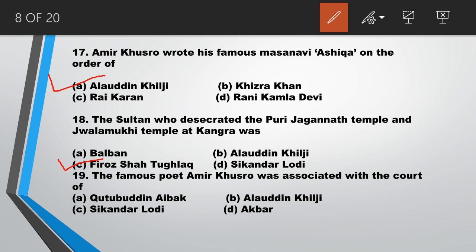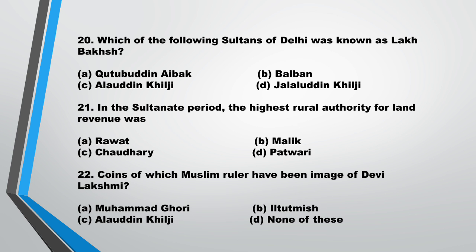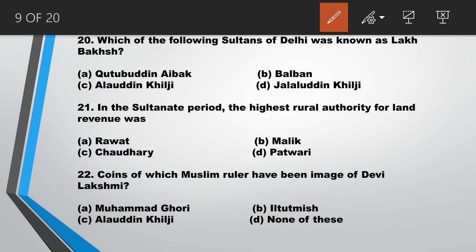Question number 19: the famous poet Amir Khusro was associated with the court of answer B, Alauddin Khilji. Question number 20: which of the following Sultans of Delhi was known as Lakhbakhsh? Answer is A, Qutbuddin Aibak. Question number 21: in the Sultanate period, the highest rural authority for land revenue was answer C, Chaudhary.